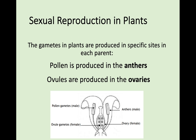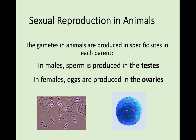Now let's look at where gametes are produced in plants. Pollen, the male gamete, is produced in the anthers — the parts sticking up toward the top of the diagram. Ovules are produced in the ovaries; ovules and ovaries sound similar, which helps you remember. In animals it's slightly different: sperm is produced in the testes, the male gamete, while eggs are produced in the ovaries — the same term as in plants. In an exam you could be asked to state the site of gamete production or what is produced in, for example, the ovaries or the testes.